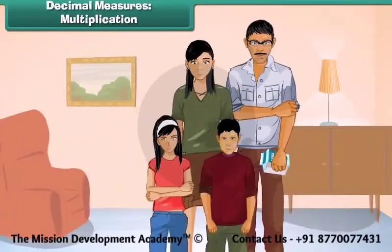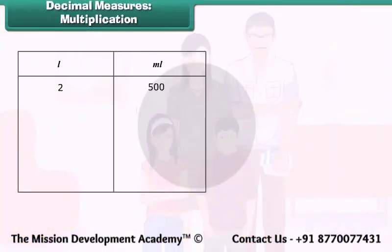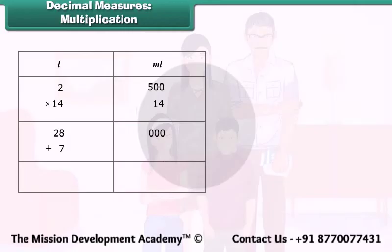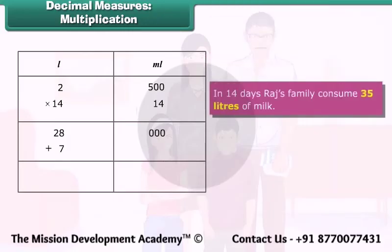Raju's family has a consumption of 2 liters and 500 milliliters of milk per day. How much milk is consumed by this family in 14 days? Multiplying 14 with 2 liters and 500 milliliters, we get 28 liters and 7000 milliliters. Since 1000 milliliters equals 1 liter, 7000 milliliters equals 7 liters. These 7 liters are added to 28 liters. Thus, in 14 days, Raju's family consumes 35 liters of milk.